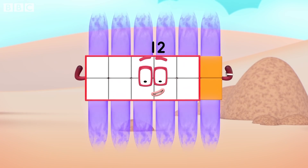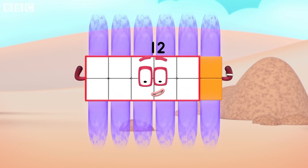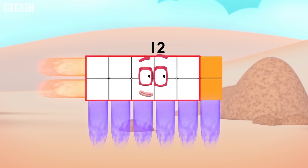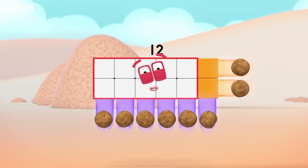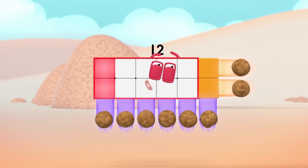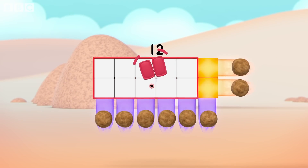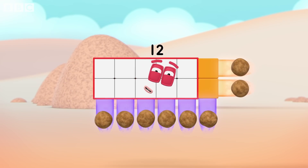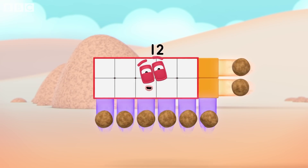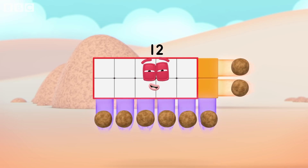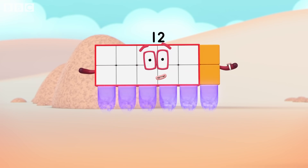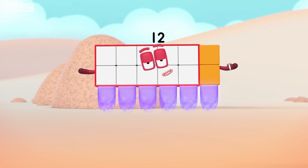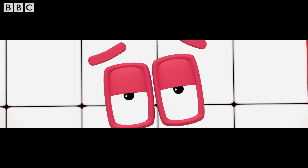Six by two. Six by two is next in line — six lots of two, it's a clever design. And if you want to see how all this fits, I can break it all to bits — break away!